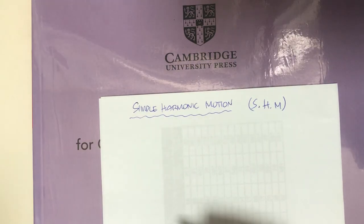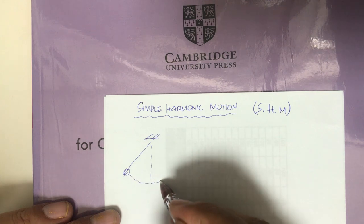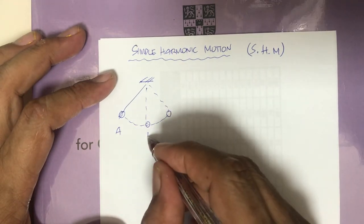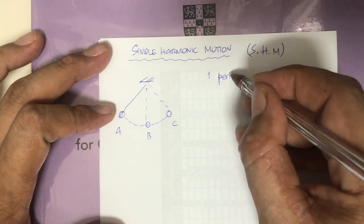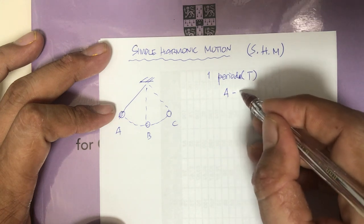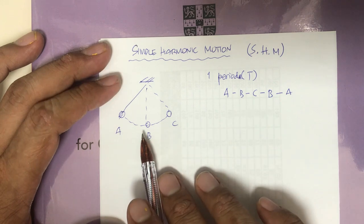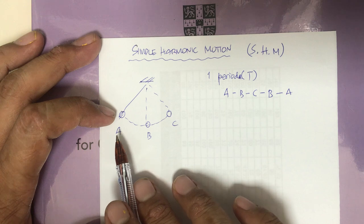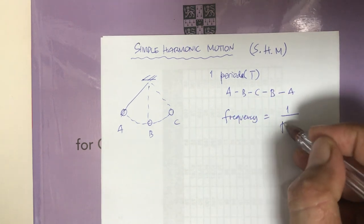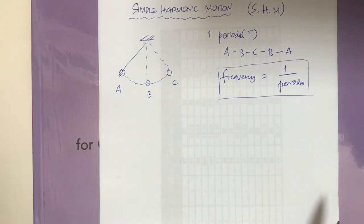When we have a pendulum and we swing it, let's say position A, position B, and position C — one period T is when we start from A to B to C to B again and back to A. This is one period: how many seconds the pendulum takes to return to its initial position. We can find frequency as one over period, or 1/T.